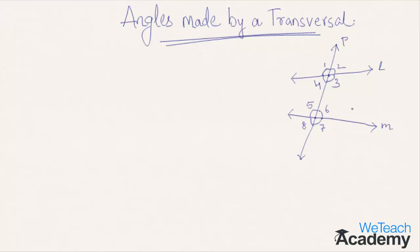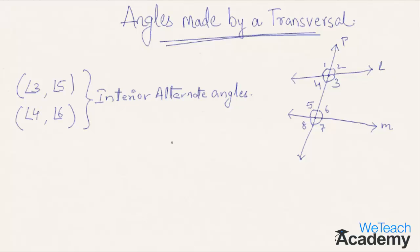Considering interior angles 3, 4, 5, and 6: angles 3 and 5 lie on different vertices and are on either side of the transversal. Similarly, angles 4 and 6 are also at different vertices and on either side of the transversal. Hence, angle 3 and angle 5 form one pair, and angle 4 and angle 6 form another pair — these are called interior alternate angles.